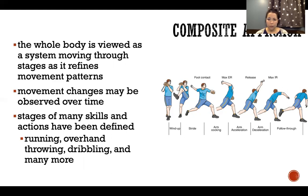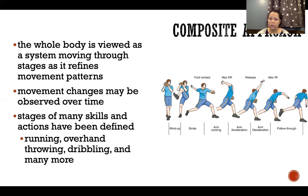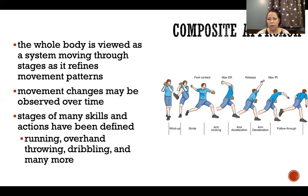Many different skills have been defined using the composite approach — like running, overhand throwing, dribbling, and so on. Lots of different skills and movements have been broken into phases and stages of learning and described so that when someone is coaching children or teaching athletes new skills, you have a way to measure what they're doing against standardized approaches. Although it is qualitative analysis, we still have structure and ways of analyzing movement that help us give something to compare against and see how the person is progressing.